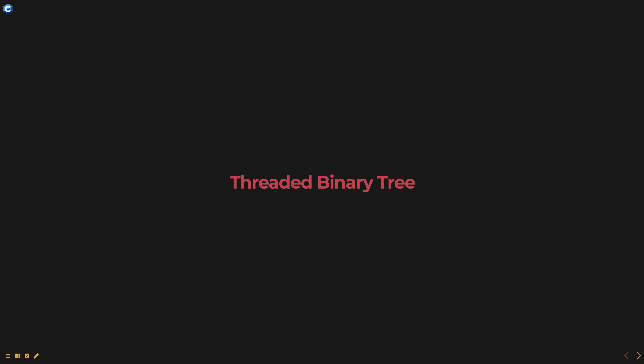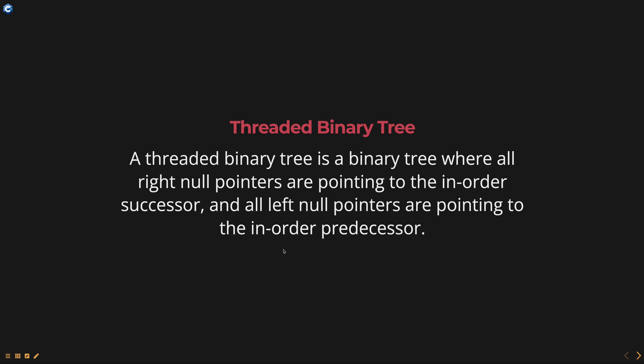Today we are going to talk about threaded binary tree, part of the data structures using C++ course. A threaded binary tree is a binary tree where all right null pointers are pointing to the in-order successor and all left null pointers are pointing to the in-order predecessor. This allows for faster traversal of the binary tree without the need to store the parent node of each node.